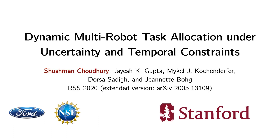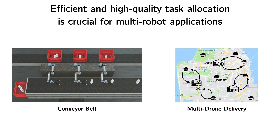Hello, and welcome to our RSS 2020 talk on optimally assigning robots to a stream of incoming tasks while accounting for uncertainty and time constraints. Efficient and high-quality task allocation is crucial for applications with multiple robots working together, from logistics to manufacturing to services. Consider two real-world examples: warehouse operations involve a team of robot arms collaborating on an assembly line, and on-demand delivery services dispatch drones to incoming package delivery requests.